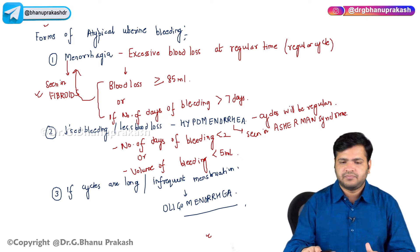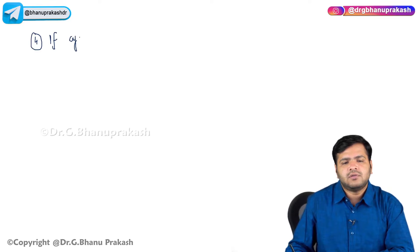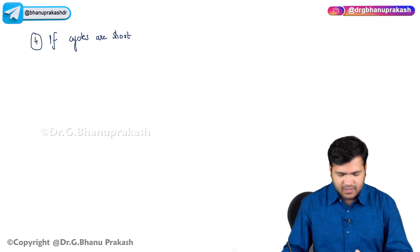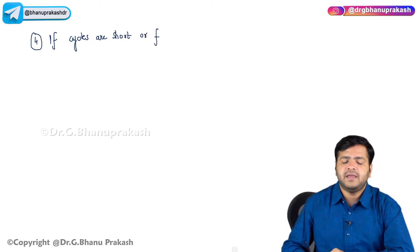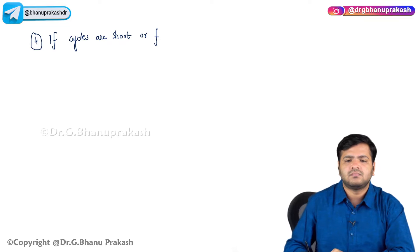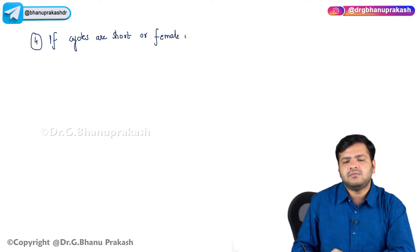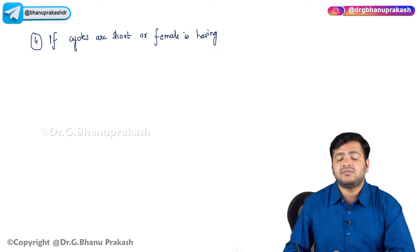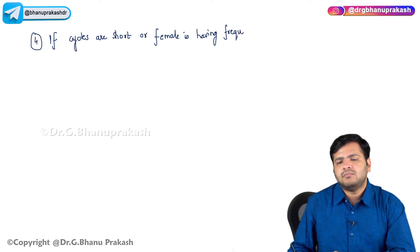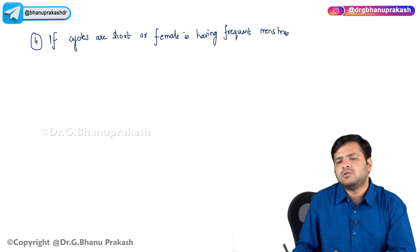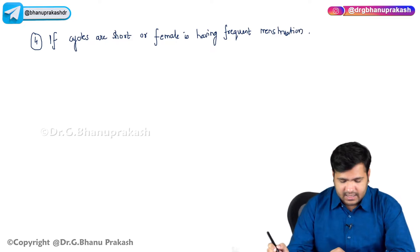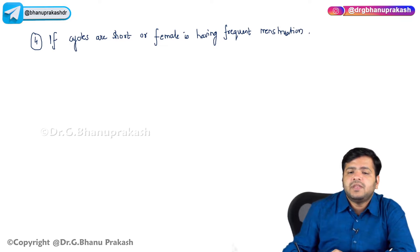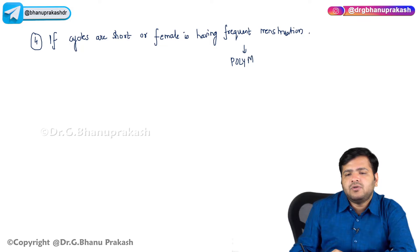The fourth one: if the cycles are short, or the female is having constant or frequent menstruation, then it is called polymenorrhagia.